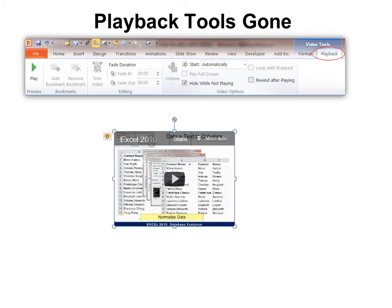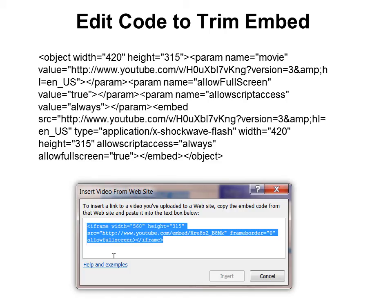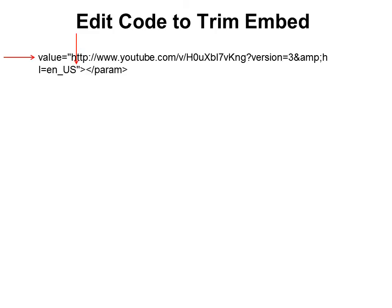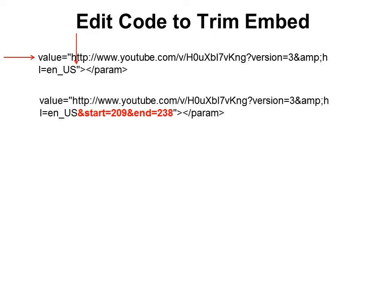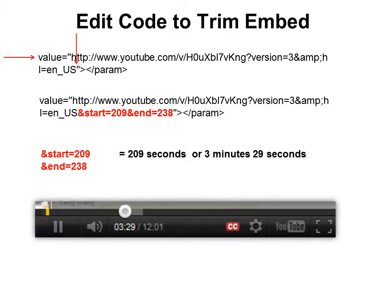So what we want to do is change that code. This is the code that you would have if you were to copy it — this is one of my YouTube videos. All we worry about is the information that starts after the word 'value' and ends before the second set of quotes. Then you want to insert some more code in there to make it start automatically.